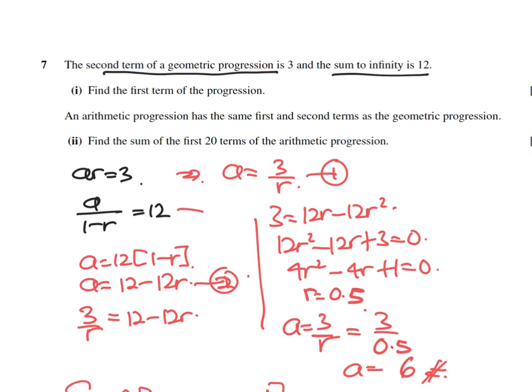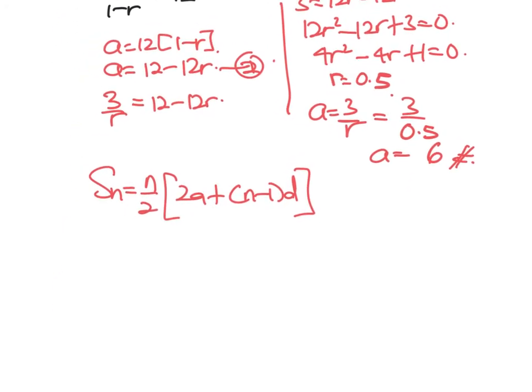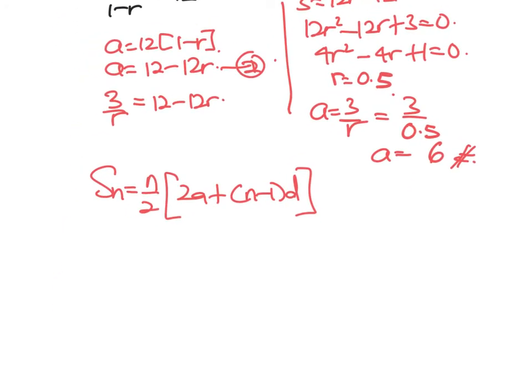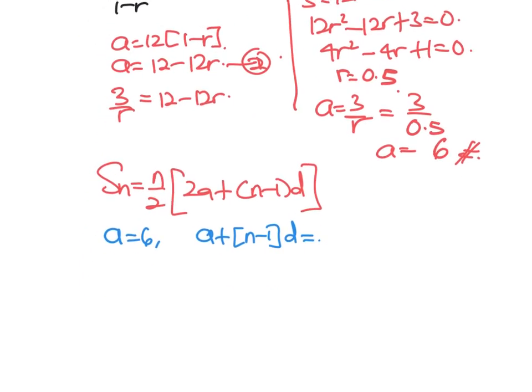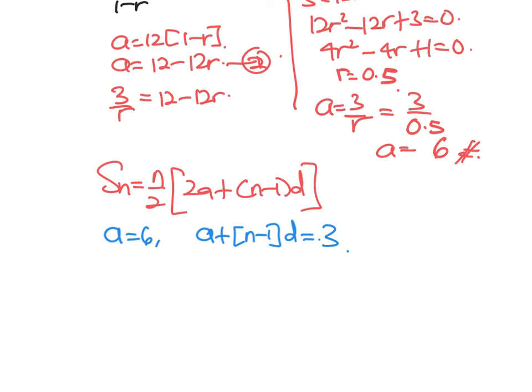It says same first term and second term as the geometric progression. Same first term: we already have a, which is 6. Then second term: it is a plus n minus 1 times d, and this equals the same second term, so ar which is 3. This equals 3. Therefore, 6 plus 2 minus 1 times d equals 3. So d equals 3 minus 6, so the difference is minus 3.